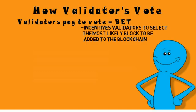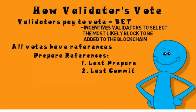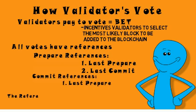Having validators pay to vote incentivizes them to choose the block most likely to be added to the blockchain and discourages pointless voting. Also, when validators vote, they must reference previous blocks. For a prepare, validators reference their last prepare and commit block. For a commit, validators reference their last prepare block. These references are the links of the blockchain.